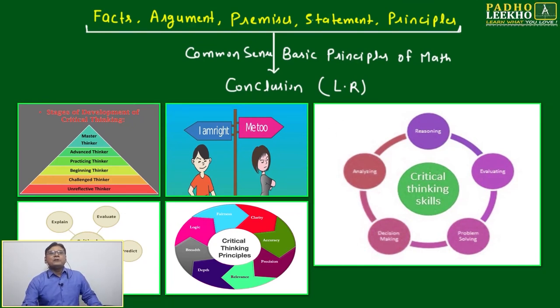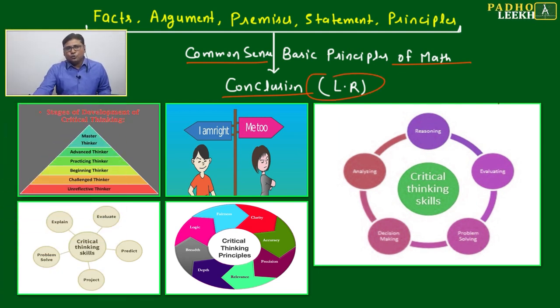Facts, argument, premises, statement, principles - you can consider all the same thing, although it has big differences. But for your level or for CAT preparation, no need to differentiate. This is part of philosophy. Related to logic, if you go deep, total 36 types of statement can be generated. One book I read, totally based on logic and how to frame the statement - that book itself is 450 pages. But no need to go to that level. Here you can consider facts, argument, premises, statement, principles the same. If you are applying common sense and basic principles of math, we will be able to conclude, and that conclusion is your logical reasoning.